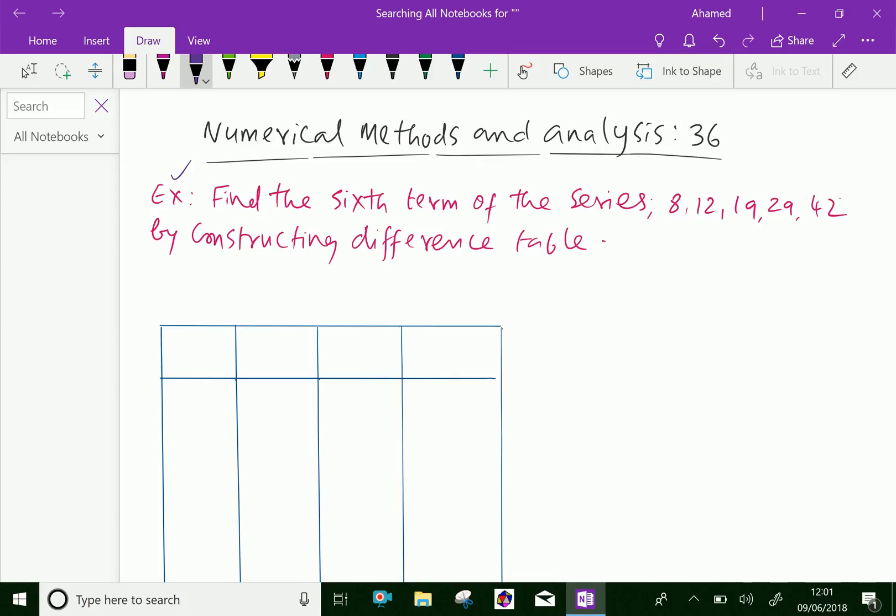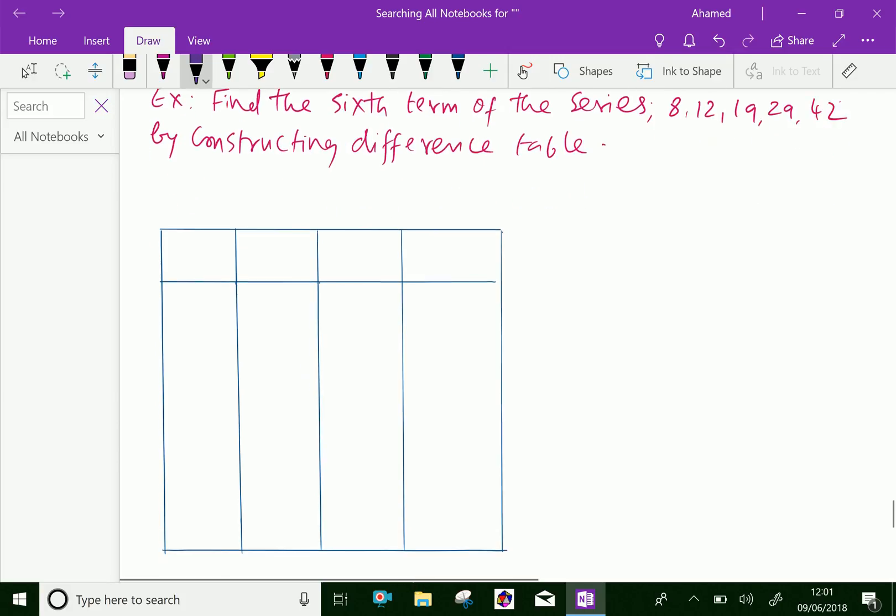Here, we can fill the given numbers in the table. The x values are equal differencing, that is 1, 2, 3, 4, 5, and 6. So regarding the y values: 8, 12, 19, 29, and 42.